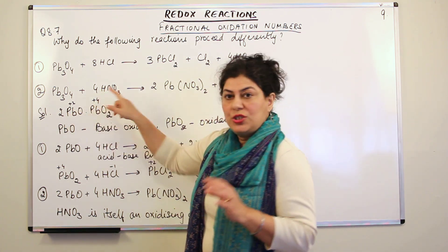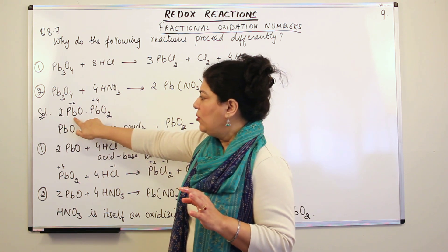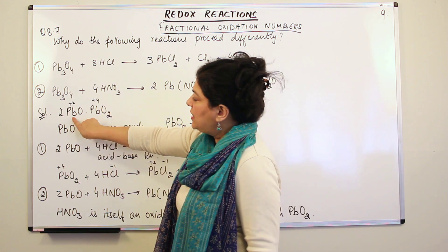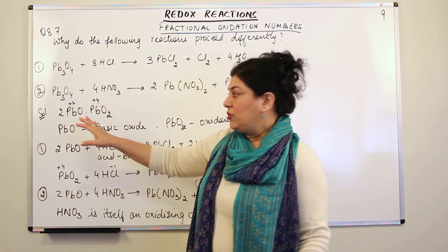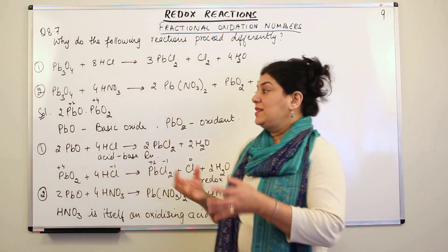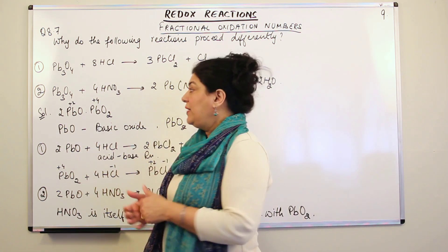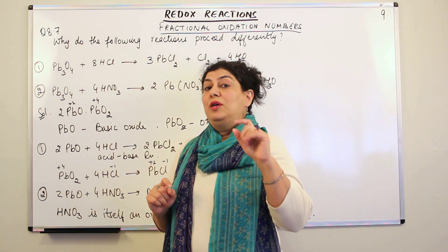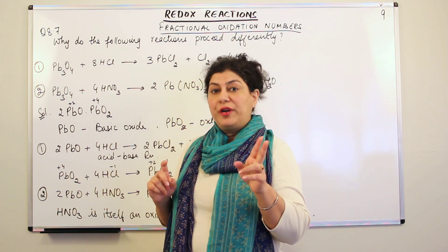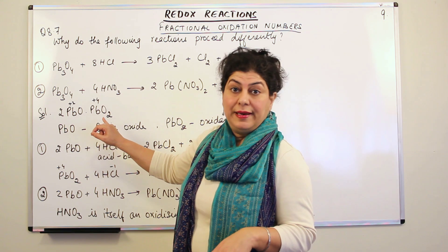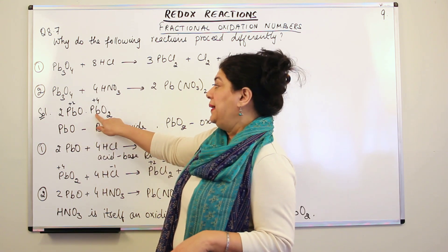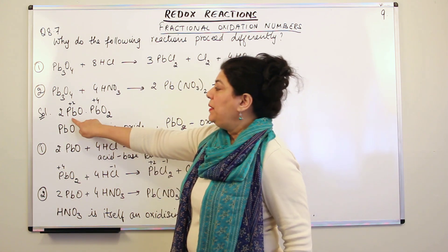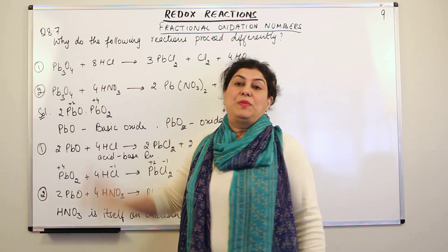If you look at the oxidation state of lead in both oxides: in PbO, oxygen always has an oxidation state of minus 2, so the oxidation state of lead in PbO will be plus 2, because it is neutralising the oxygen. But in PbO2, you have two oxygens, which means there are four negative charges in total being neutralised by the lead. Therefore the charge on lead in PbO2 should be plus 4. So the oxidation state of lead in PbO is plus 2, and in PbO2 it is plus 4.